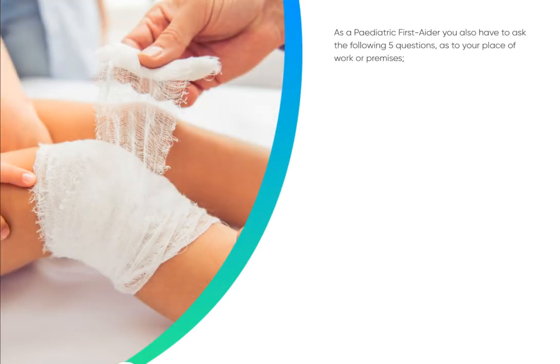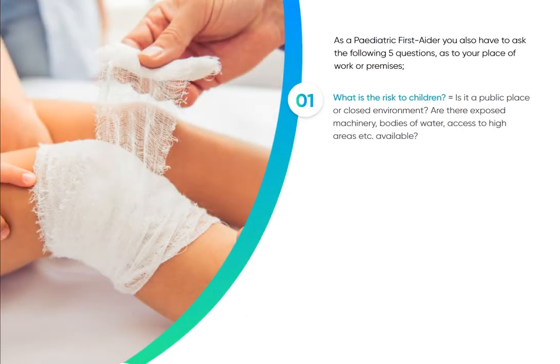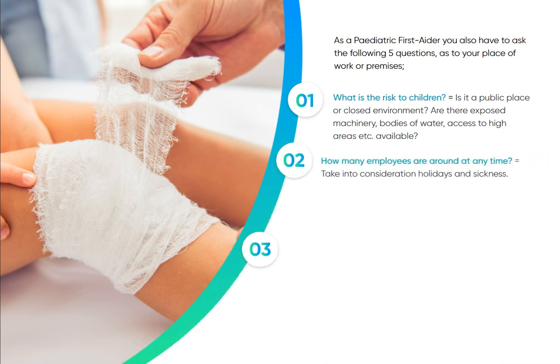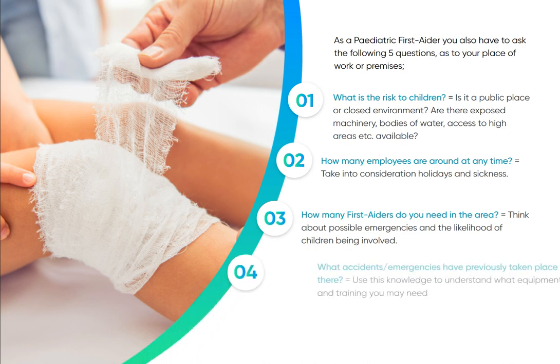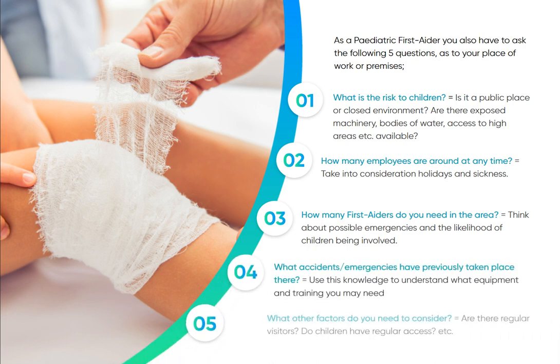As a paediatric first aider, you also need to ask five key questions about your place of work or premises. Question 1: What is the risk to children? Consider whether it is a public place or closed environment, and whether there are exposed machinery, bodies of water, or access to high areas.